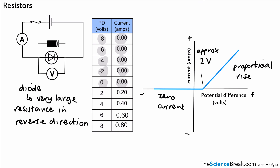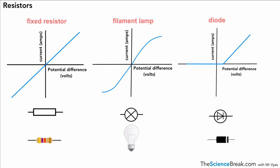That's what the graph looks like for our diode. To summarize, here are the three graphs for the three different components. Remember, the fixed resistor can also be described as an ohmic conductor — it has a fixed value at a fixed temperature. These are three graphs you need to know and be able to recognize.